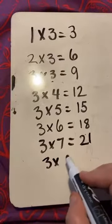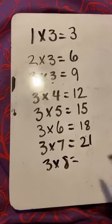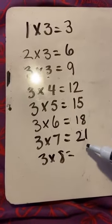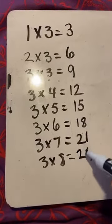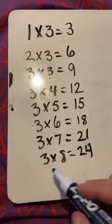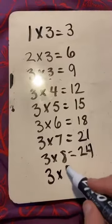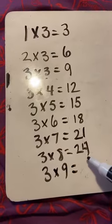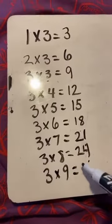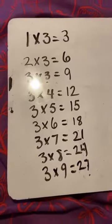3 times 8 equals, add on 3. 22, 23, 24. Very good. And 3 times 9 equals, add on 3. 25, 26, 27. Very good.